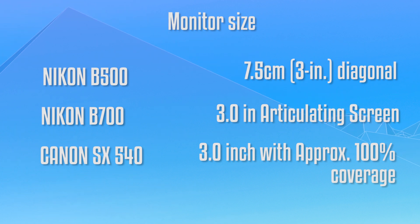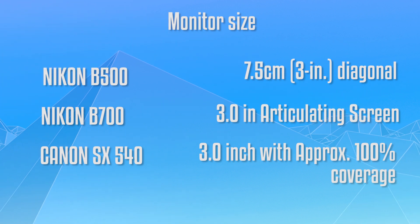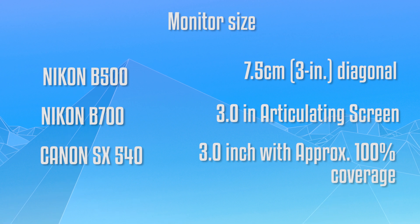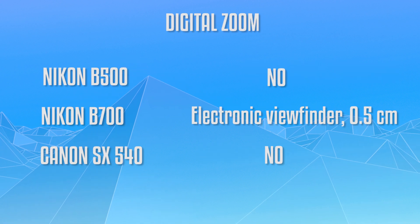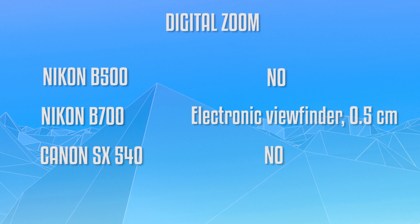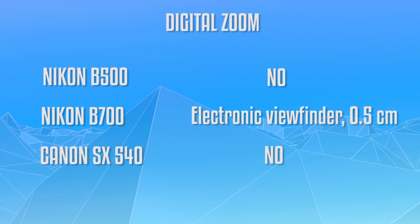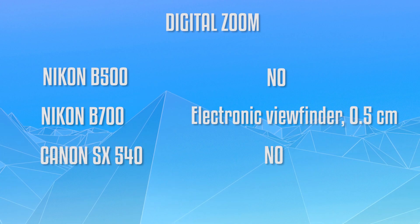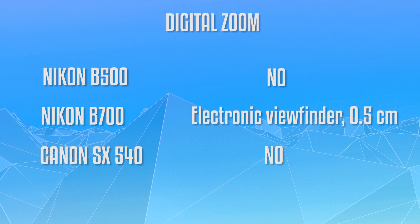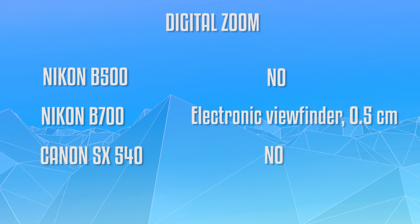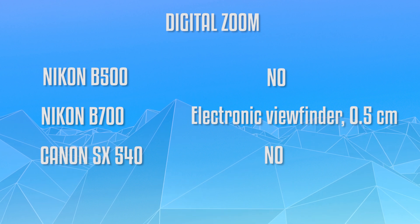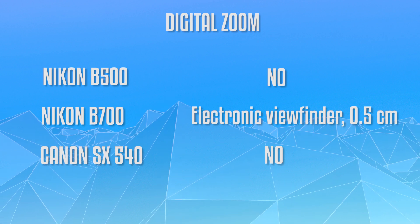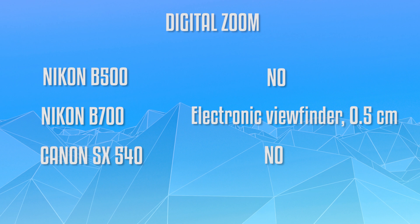All three cameras have a TFT LCD display, so the monitor resolution will be the same. Between these three, only the Nikon B700 has an electronic viewfinder — you are not getting a viewfinder with the Nikon B500 or the Canon SX 540. The Nikon B700's electronic viewfinder is 0.5 centimeters.